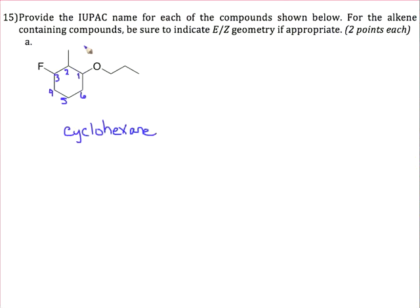Our substituents now, on carbon 1, we have an ether with 3 carbons attached. So 3 carbons is derived from propane, but because it's an ether, we'll name this as a propoxy. So we drop the ane and we add oxy, because it's this ether substituent.